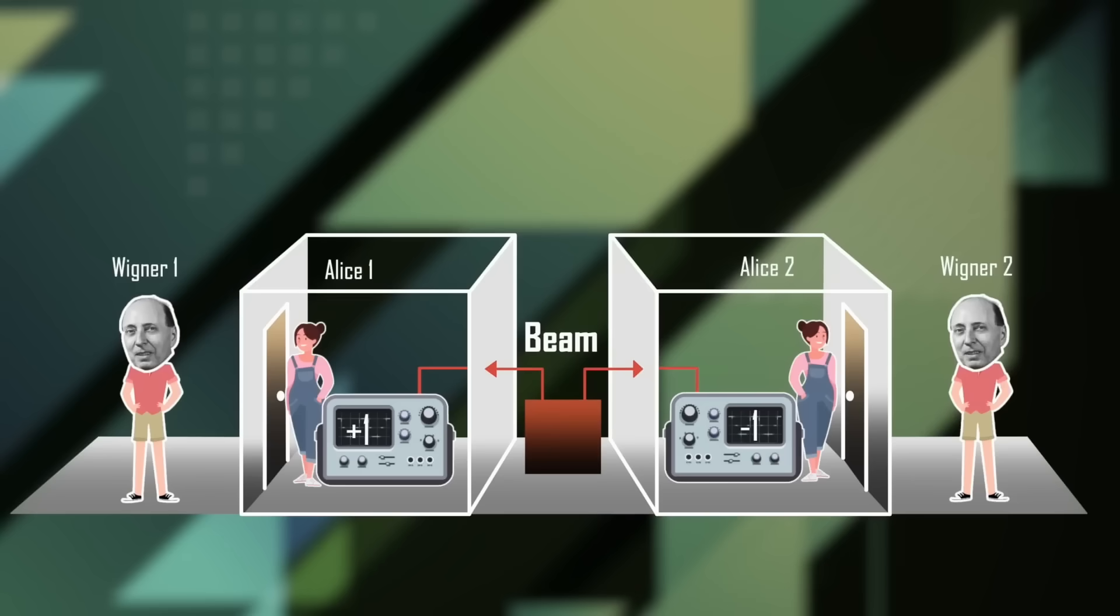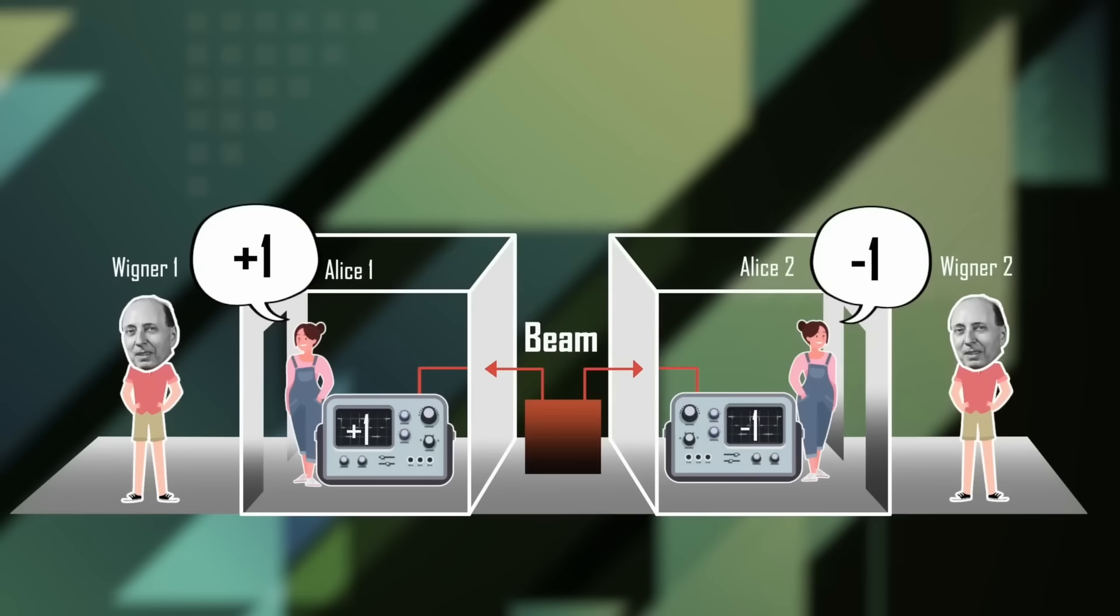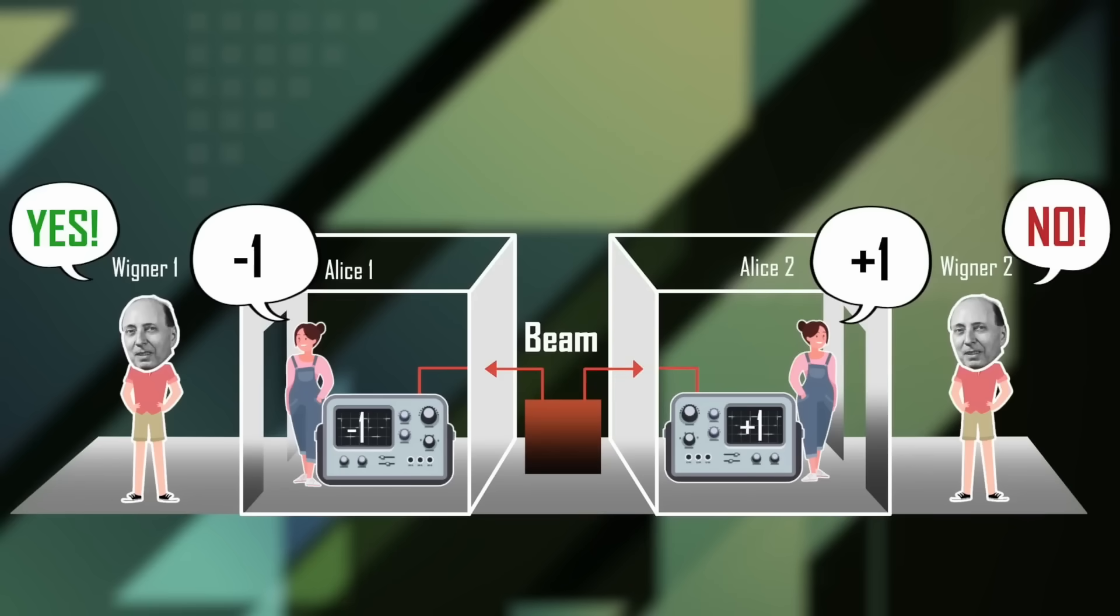Frauchinger and Renner then showed that if you take two of these friends with their labs and two people outside of the doors, then there are cases where it's impossible for all four to agree on what they've measured. That just wouldn't agree with the predictions of quantum physics. This is quite something, because it means that there isn't such a thing as objective reality in the sense that it can't be independent of us, the observer.